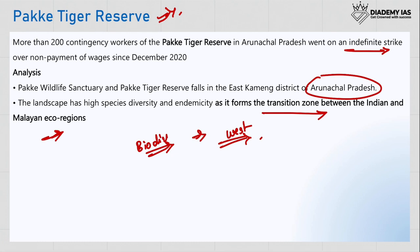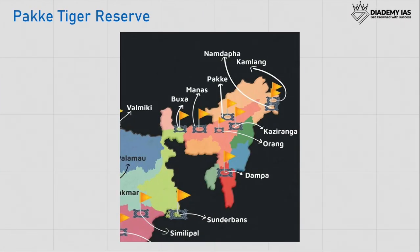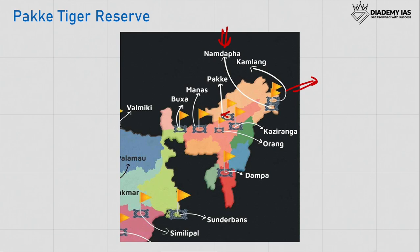Important fauna in Pakke Tiger Reserve include barking deer, hawk deer, and hornbill. On the map, Pakke Tiger Reserve is located almost at the border. Also in Arunachal Pradesh you have Kamlang and Namdapha wildlife sanctuaries. Other notable reserves in the region include Simlipal in Odisha, Valmiki in Bihar, Baksa Tiger Reserve in West Bengal, Manas in Assam, and Kaziranga and Orang in Assam.